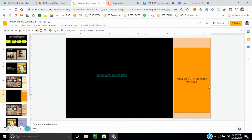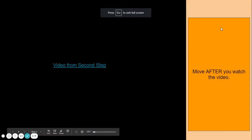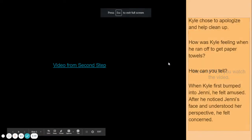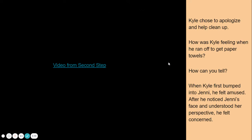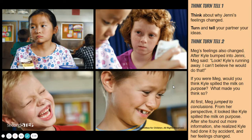That is a really nice outcome. So what do you think happened? Well, Kyle chose to apologize and to help clean up. So how was Kyle feeling when he ran off to get the paper towels? When Kyle first bumped into Jenny, he felt amused — he thought it was funny. But after he noticed Jenny's face and understood her perspective, he felt concerned and he did something about it.